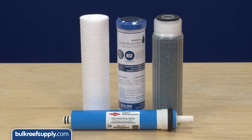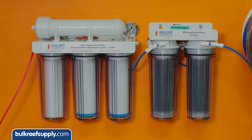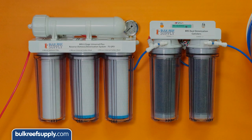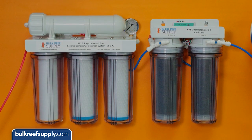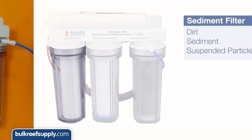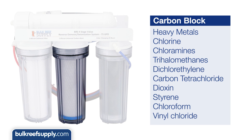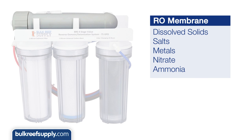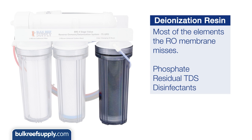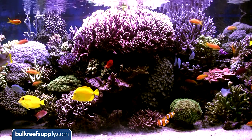First, let's give a twenty-second overview of what all these filters are for. An RODI system is a collection of filters that all have unique filtration properties. Used together in series, they protect each other and progressively filter the water. The sediment filter removes dirt, sediment, and suspended particles to protect the carbon blocks from clogging. The carbon blocks remove general chemical contaminants, many of which would otherwise pass through or damage the RO membrane. The RO membrane removes dissolved solids, salts, metals, and elements like nitrate and some forms of ammonia. The deionization stage removes most elements the RO membrane misses or is not particularly effective at, like phosphate. The net result is ultra-pure water ideal for the reef tank.